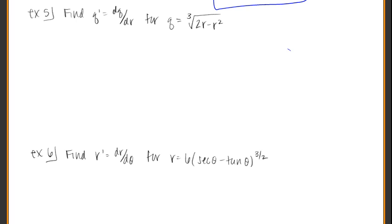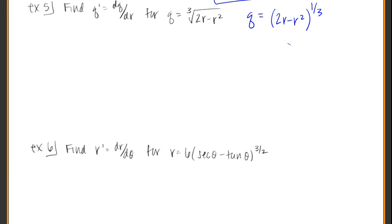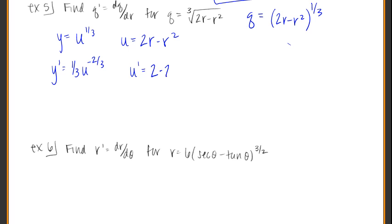Example 5: find dq/dr. We want to break it into individual pieces. What's under the radical is 2r minus r squared, and since it's a cube root, it's technically the 1/3 power. So the overall function is y equals u to the 1/3, and u equals 2r minus r squared. Then y prime is 1/3 times u to the negative 2/3, and u prime — the derivative of 2r minus r squared — is 2 minus 2r.